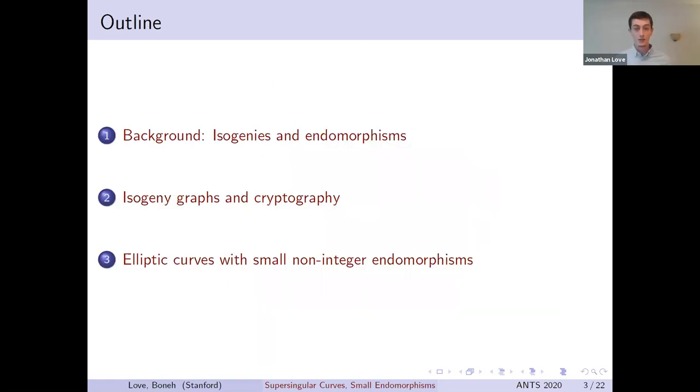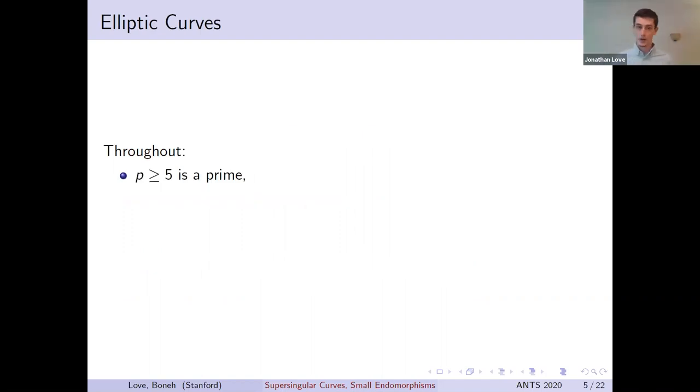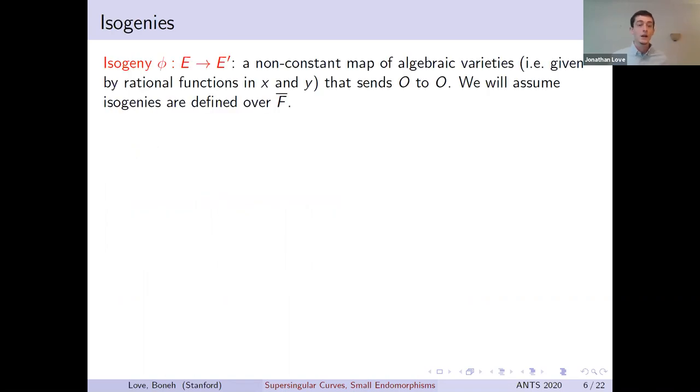We'll start with some definitions and examples for background, move on to discussing isogeny graphs, briefly touching on their applications to cryptography, and then finally we will describe this new set of curves. For this talk, p will always denote some large prime, and E and E′ will refer to elliptic curves that are defined over a finite field F of characteristic p. In order to move between different elliptic curves, we use isogenies. An isogeny is a map of algebraic varieties that sends the identity of E to the identity of E′. This essentially just means that we can express the map using rational functions in the coordinates. For our purposes, the coefficients can be anything in the algebraic closure of F. Despite being defined geometrically, isogenies actually also preserve the group structure of the elliptic curves.